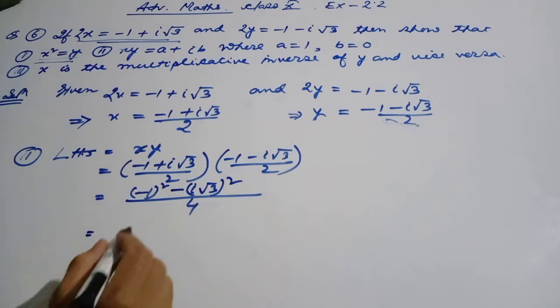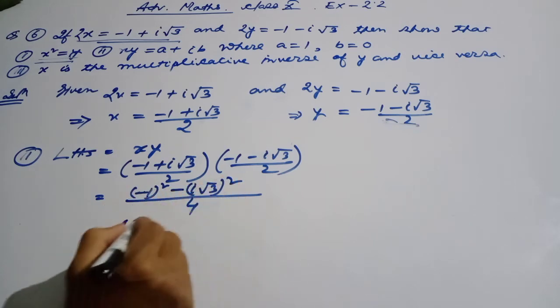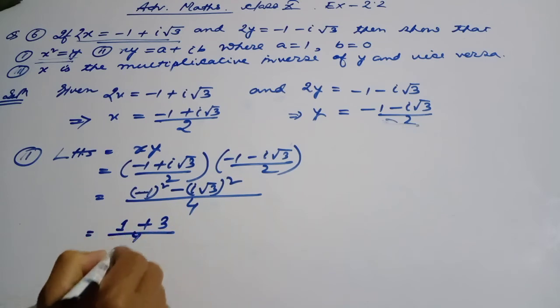A plus b, a minus b. I will be very much more. Minus 1 whole square minus i root 3 whole square. One minus 1 is 4. This one is comma minus this plus 2 root 3. This you can look for 1 plus 3, 4 by 4.